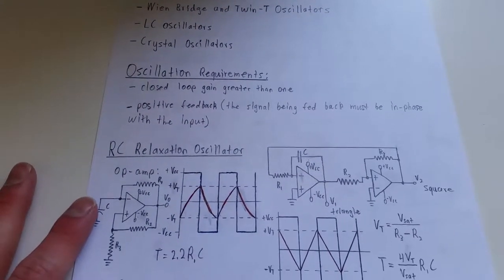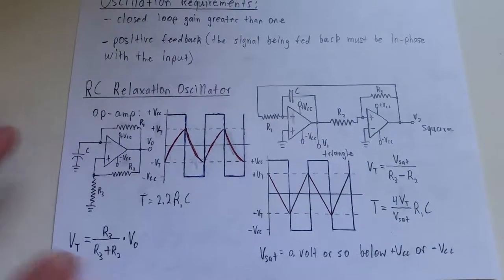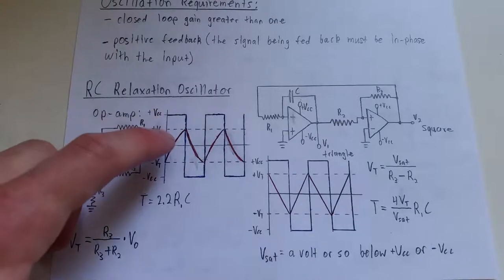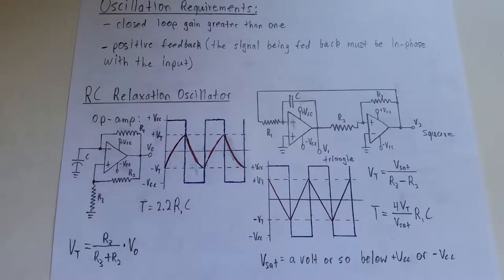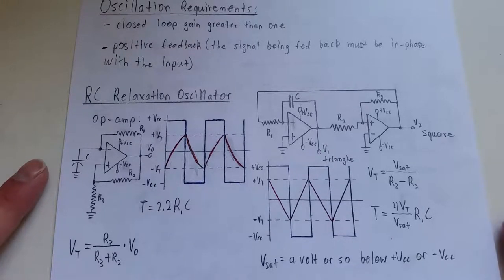Probably the most simple is what's called the RC relaxation oscillator, which basically is where you have a capacitor being charged up and once it reaches a certain threshold, it discharges. The circuit changes states and drains the capacitor the exact same way. When it hits the negative voltage of that threshold, it does the same thing. It stops, turns around, and charges back up.